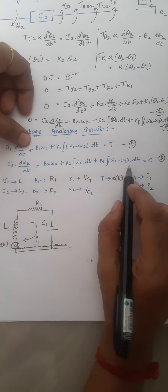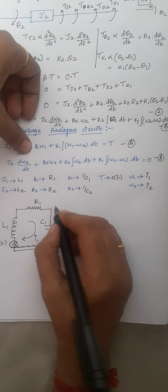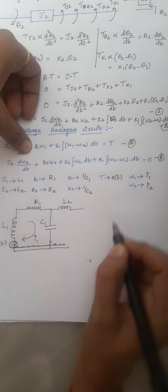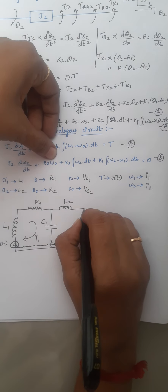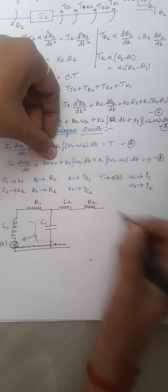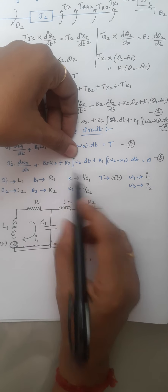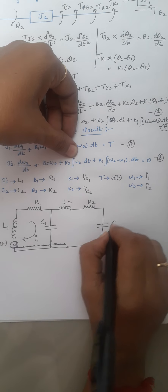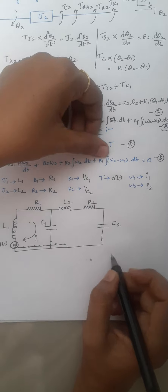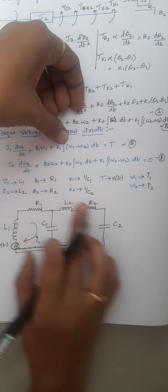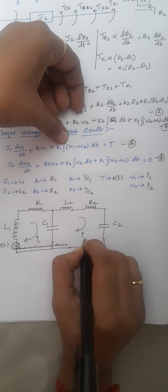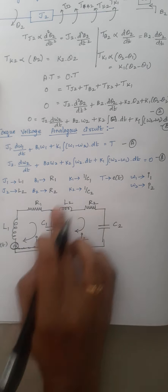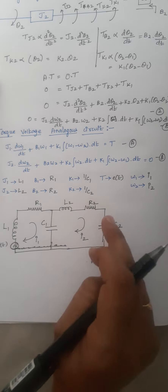For the second expression: J2 is represented as L2, B2 as resistor R2, K2 as capacitor C2, and K1 is the capacitor C1 already drawn in loop 1. The current flowing through this second loop is I2. The second expression has 4 parts and the second loop also has 4 elements: L2, R2, C2, and C1.